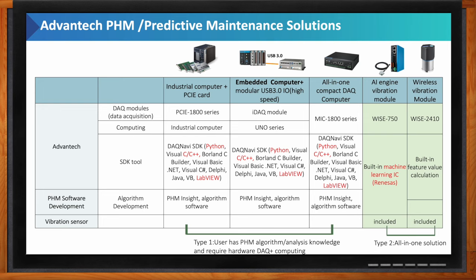For users looking for a total PHM solution, there are two options: the WISE-750 and the WISE-2410. The WISE-750 has an integrated vibration sensor and uses a Renesas machine learning IC, so you can perform machine learning for predictive maintenance. The WISE-2410 is a wireless vibration sensor — the processor inside does the calculation for all the feature values needed for predictive maintenance. Both include vibration sensors.